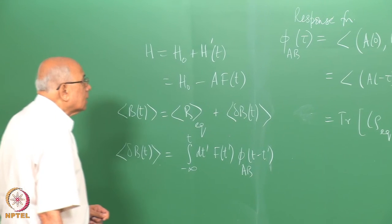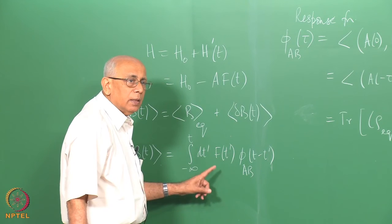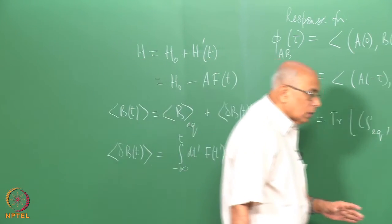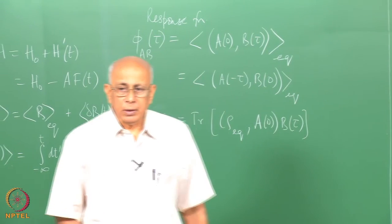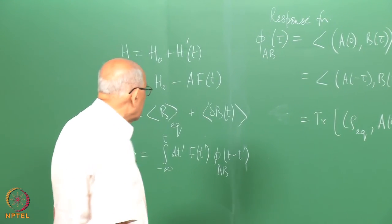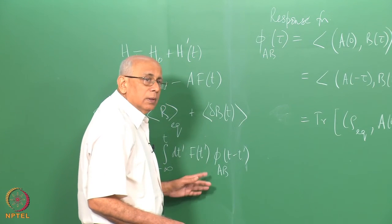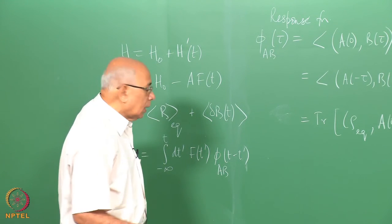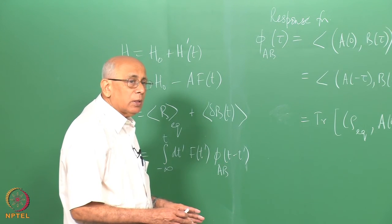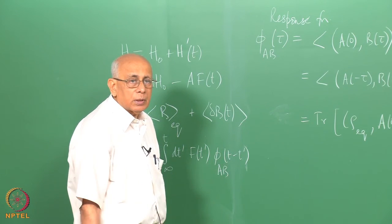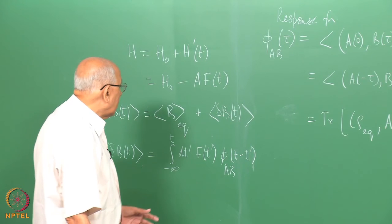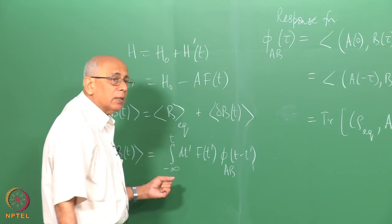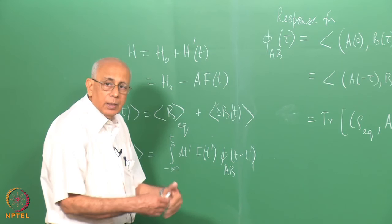While the formula holds for arbitrary f(t), because it is a linear response, the response to a sum of two forces is the sum of the individual responses — the superposition principle. Any arbitrary time-dependent force can be resolved into Fourier components, and the response to each frequency component can be summed to get the full response. This is the whole point of Fourier analysis.